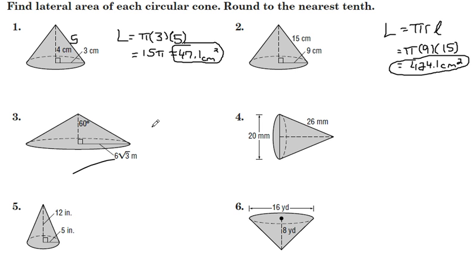For number three, pi R L, radius is six radical three. Now this is a 30, 60, 90 triangle, right triangle. Our long side is six radical three, that means our short side is six.